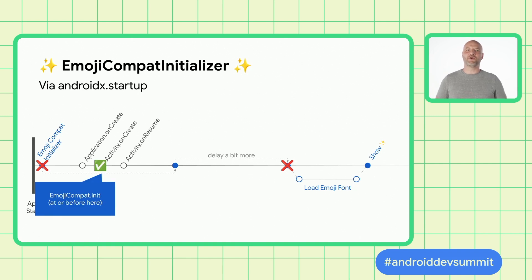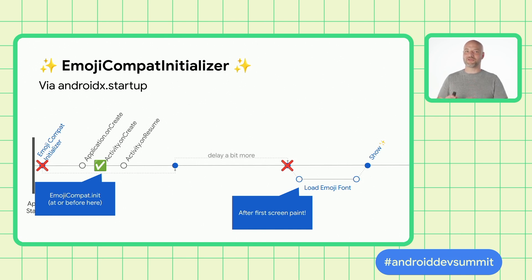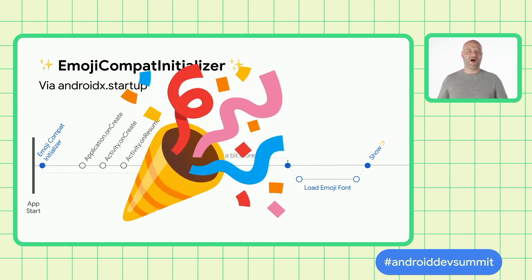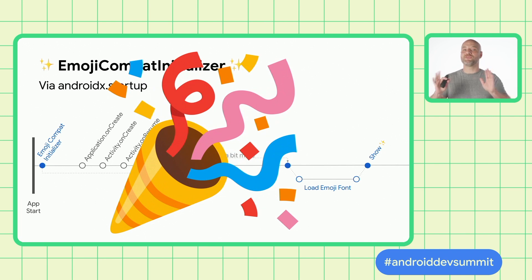If you go down that route, here are a few tips. First, make sure you initialize EmojiCompat prior to Activity onCreate — this ensures that every TextView will be able to display modern emoji. Just like the EmojiCompat initializer, it's a really good idea to defer emoji font load until well after your first screen paints. It runs on a background thread, but it also does a lot of network and disk IO — not the sort of thing you want contending with your first screen load. For most apps, we strongly recommend using the default implementation of EmojiCompat initializer.